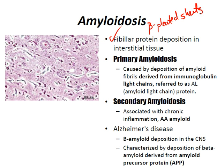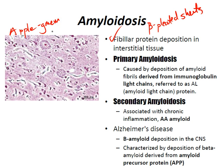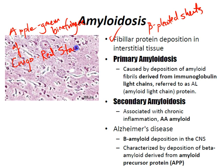Amyloidosis may be localized, such as in the brain in Alzheimer's, or systemic, such as in rheumatoid arthritis. The diagnosis is made by its beta-pleated sheets, demonstrated by apple-green birefringence of Congo red stain under polarized light, and it has a waxy appearance.